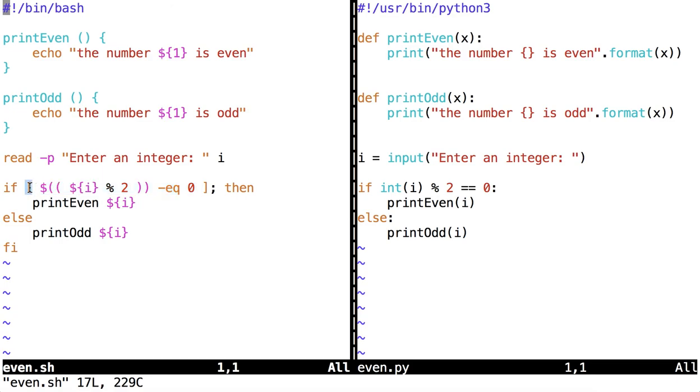The square bracket says find out if what's in here is true. The dollar sign, double parentheses, says do some integer evaluation inside of these parentheses. In this case, we're expanding the value stored at i using the dollar sign curly brace syntax, mod 2, and then this expression gives us a value to compare with 0. Specifically, whether or not that value is equal to 0, specified by eq for equal.